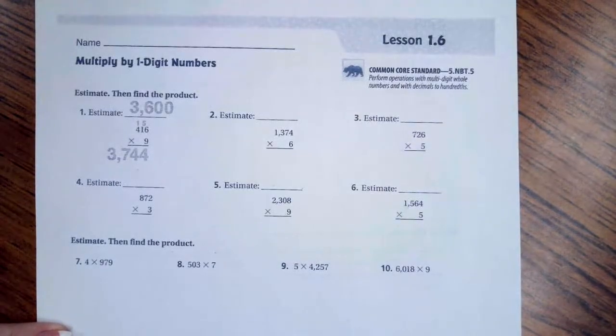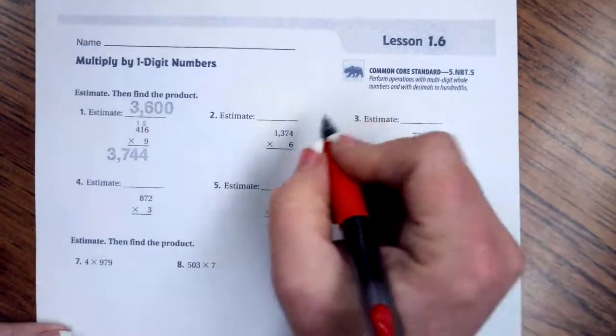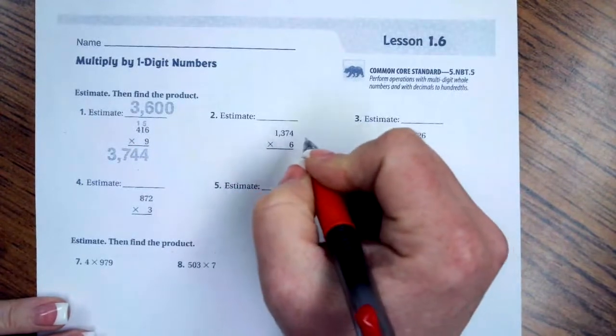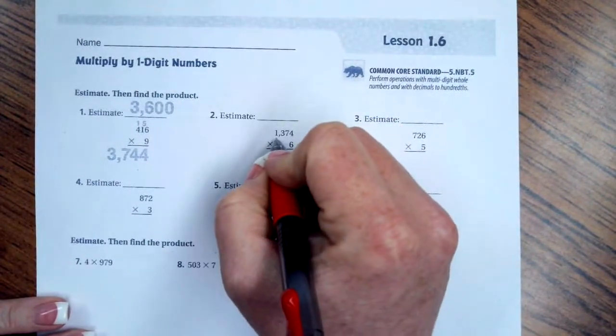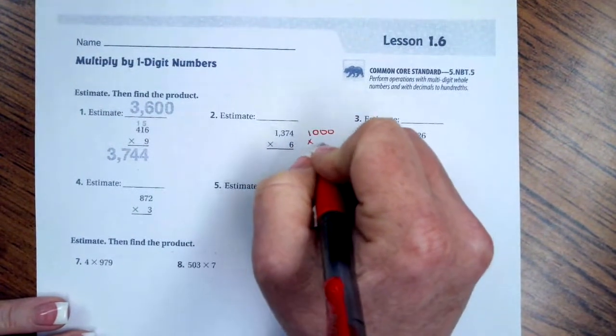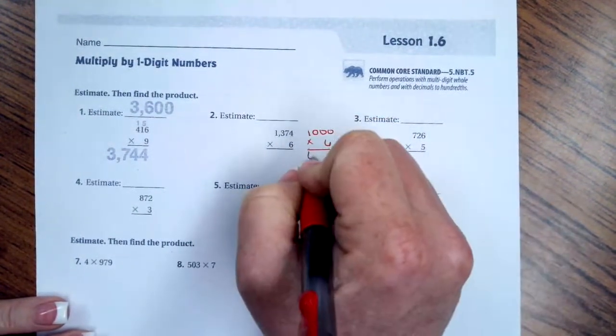Hi guys, welcome to fifth grade chapter one lesson six. We're going to go ahead and get started with number two. So first we need to estimate and we're rounding to the nearest thousand on this one. Thirteen hundred is going to round to one thousand and then we're going to keep the six, so our estimate would be about six thousand.